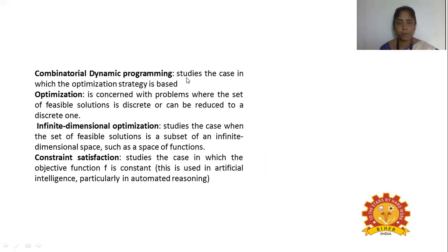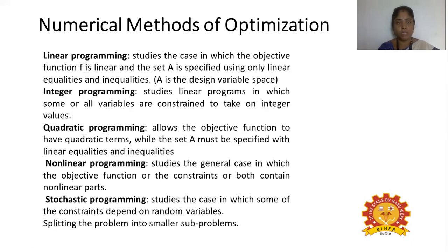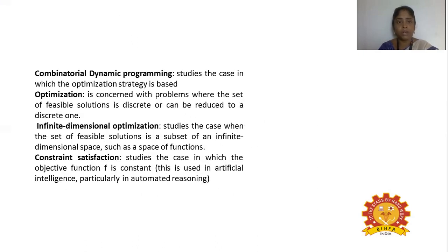Combinatorial dynamic programming is the study of which optimization strategy to use among all available types — whether a linear and integer combination, integer and quadratic, linear and quadratic, or nonlinear and stochastic programming. Whatever combination we use for the particular study is called combinatorial dynamic programming.